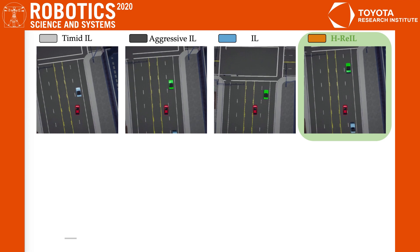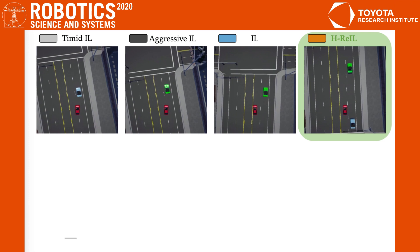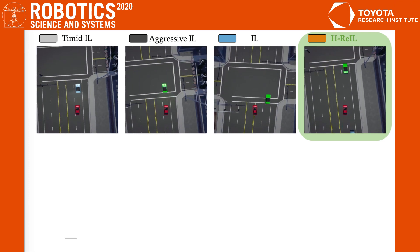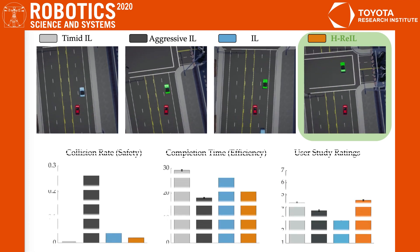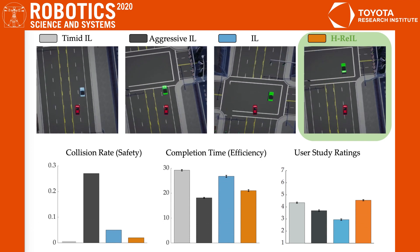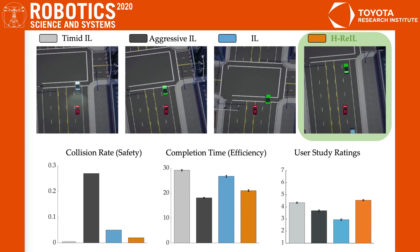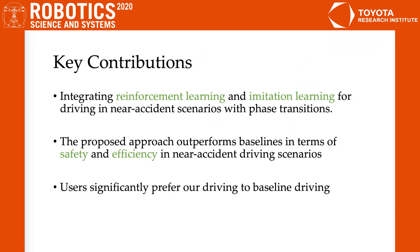The timid driver is learned on demonstrations where the car always merges behind. The aggressive driver is learned on demonstrations where the car always merges between. The imitation learning driver is learned on a mix of both demonstrations. Our approach realizes the best trade-off between safety and efficiency, and it is preferred compared to the baselines on a 7-point Likert scale rating. So to summarize, our work proposes a new way of driving in near accident scenarios with phase transitions by combining reinforcement learning and imitation learning, which optimally balances between safety and efficiency. Thank you.